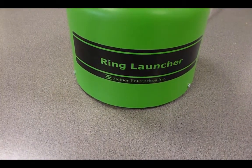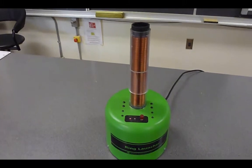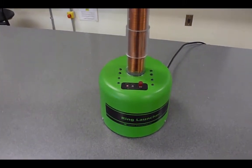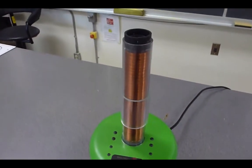This demo is with something called the ring launcher. It is a coil or solenoid of wire connected to a power supply. When the button is pushed, a current flows through the solenoid which makes a magnetic field.